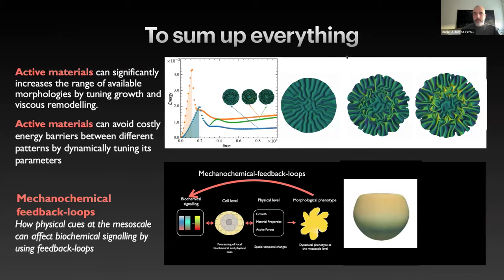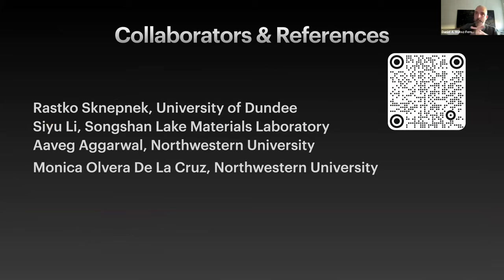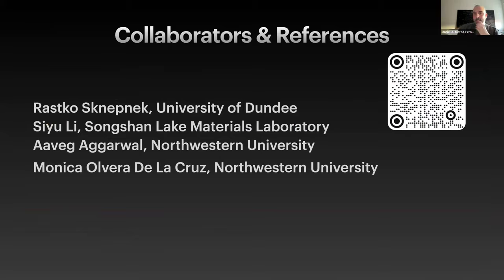To sum up, I showed you today a model of thin sheet mechanics that can operate out of equilibrium. By changing the growth rate, we can access certain morphologies and a diversity of shapes that you wouldn't be able to reach adiabatically. We can also introduce simple mechanical-chemical feedback loops by coupling the reference metric of the growth with the chemistry. Thank you. These are my collaborators. If you're interested, I've created a Google doc with references, and if you think any reference is missing, please send me an email and we'll add it.